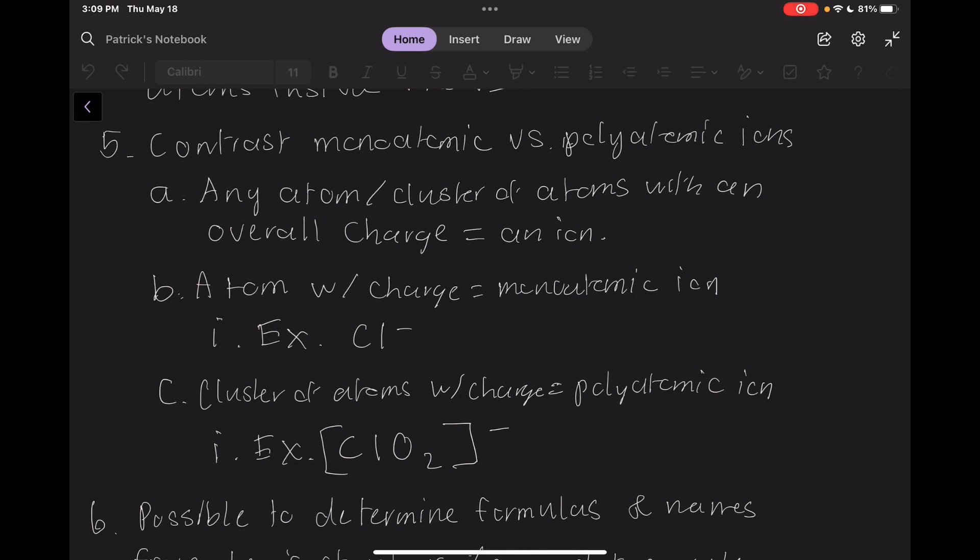There are more notes here pertaining to the difference between regular or monoatomic ions and polyatomic ions, but I think we've discussed this enough already. The most basic and fundamental way to put it is that a monoatomic ion is an atom with an overall charge, while a polyatomic ion is a molecule with an overall charge. The chlorine anion is an example of a monoatomic ion, and the ClO2 molecule here, the technical term of which is a chlorite ion, is an example of a polyatomic ion.